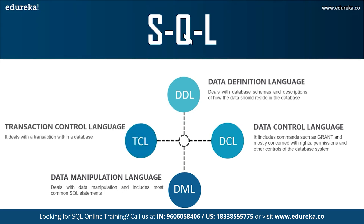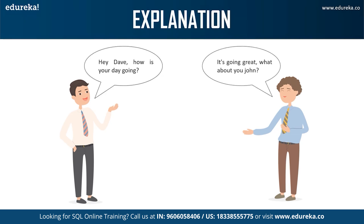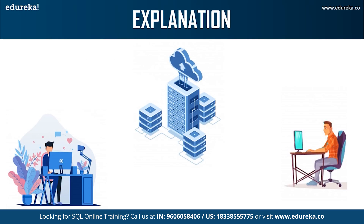The final command is TCL — Transaction Control Language — which allows you to deal with transactions of the database. A few of the TCL commands are COMMIT, ROLLBACK, SAVEPOINT, and SET TRANSACTION. To understand SQL in a better way, let's use an analogy. If two people want to communicate with each other, they have to use a language understood by both. Here, John wants to start a conversation with Dave and uses English. If one of them didn't understand the other, there would be no conversation at all. Similarly, if we consider one person as the user and the other as the database, then the language used to communicate between them is called SQL — just as a language has grammar and rules, SQL has its own directives.